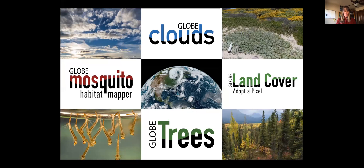There are four protocols inside the app: clouds, mosquito habitats, trees, and land cover. All of them involve a similar process of going to a location, recording the date, time, and your latitude and longitude, and then recording what you see — whether you're looking at the sky and recording clouds, identifying where you see mosquito larvae in water, or telling us what's on the land around you — and then taking a picture to document what you see.